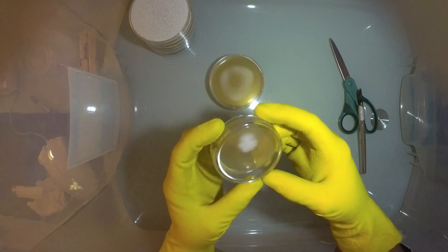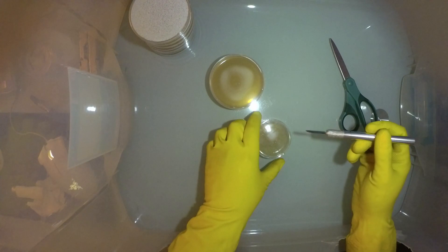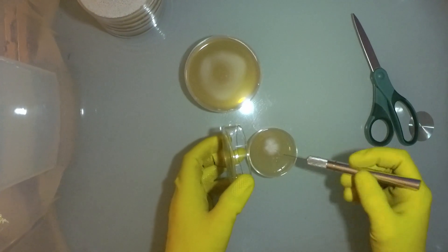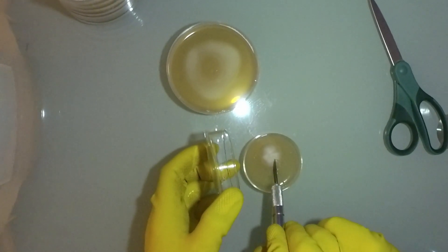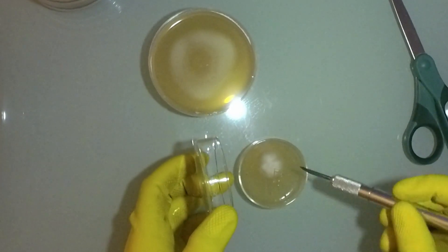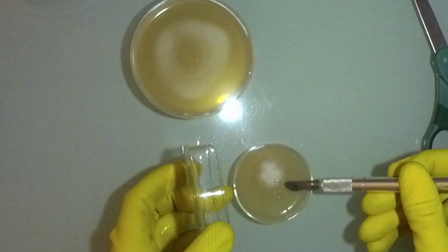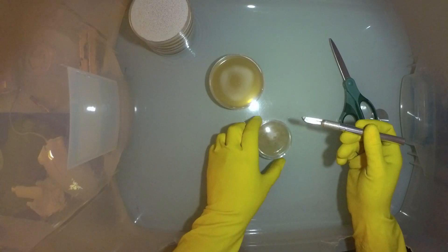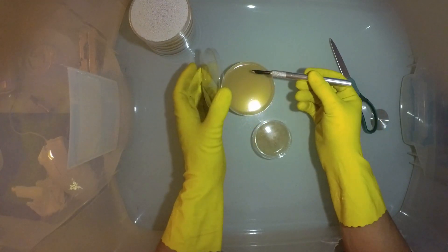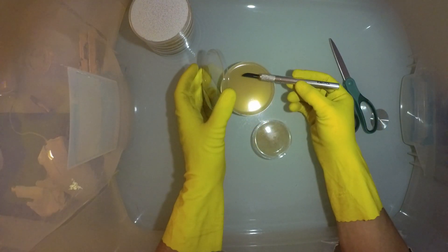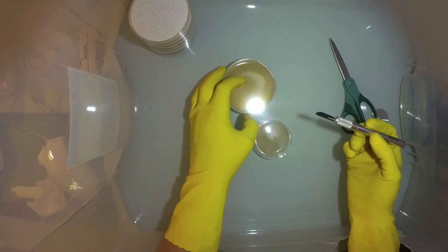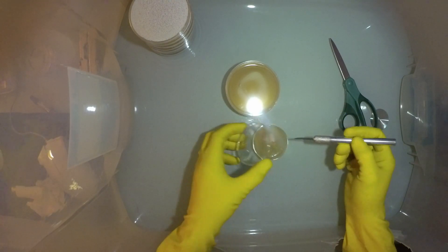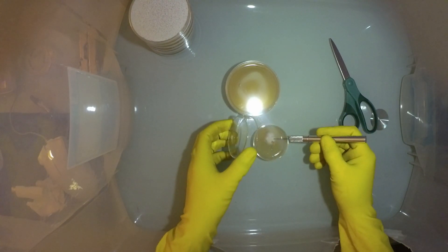If you notice, it's kind of divided into two sections. I'm going to take three transfers from each section. I'm putting three transfers on each plate. This saves resources.